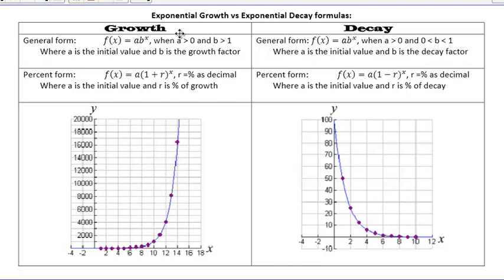When we graph growth and decay exponential functions, this would be a representation of growth, and this would be a representation of decay. You can see the growth is going up more on the positive side — it's going up, so we can say it's positive or growth. And decay is going down. So again, these are just going to be some good references for you.